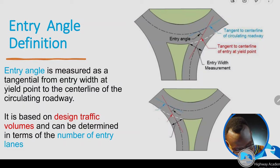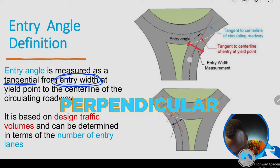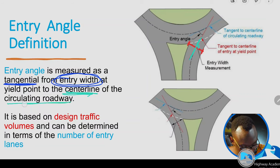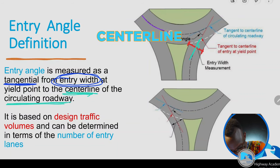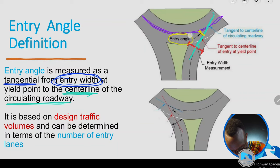What's the entry angle? The entry angle is measured as a tangent from the entry width. Once you get a tangent from the entry width, that's the first starting point, and then we look at the center line of the circulating roadway. Where the center line of the circulating roadway and the tangential line meet — that is our entry angle.